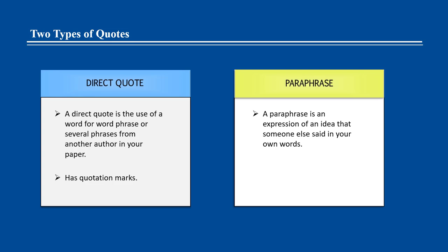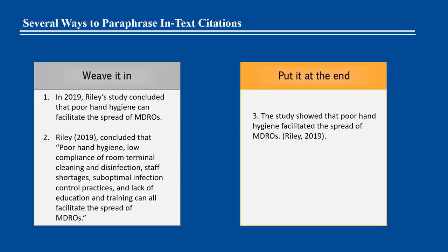A direct quote would have quotation marks around it, while a paraphrase would not. There are two ways you can use in-text citations – by either weaving the information into the text or placing it at the end. Two pieces of information are always included – the author's last name and the date.